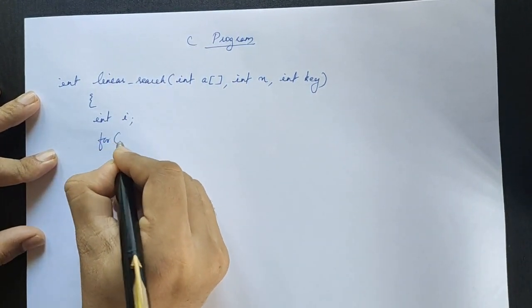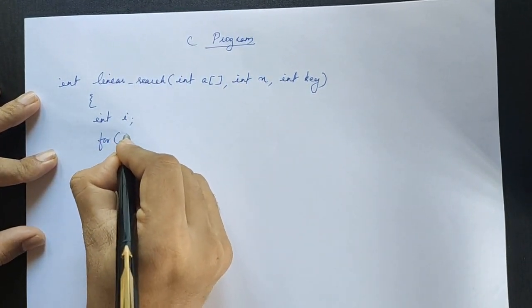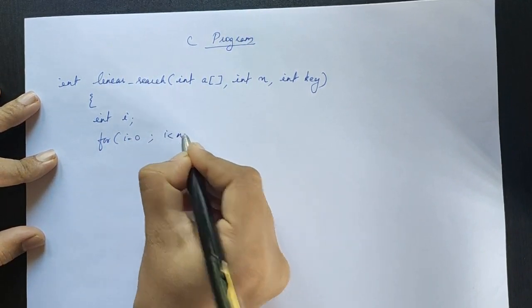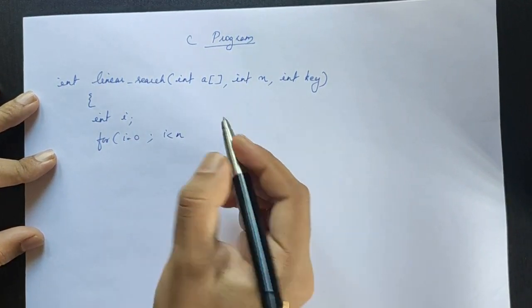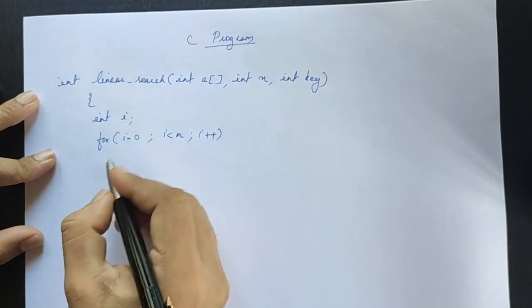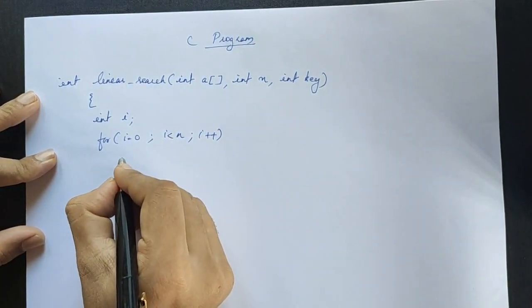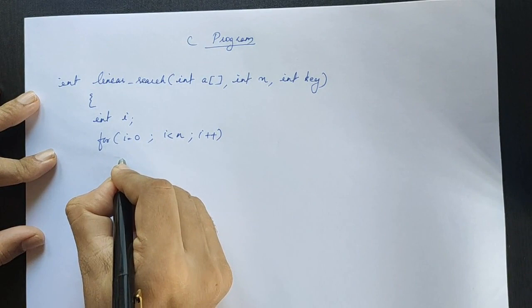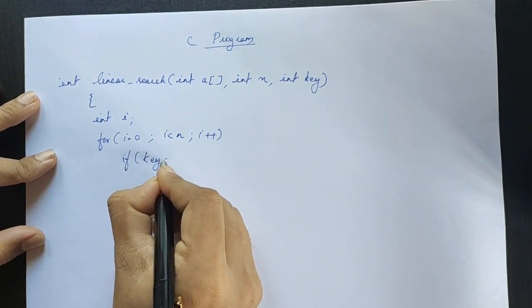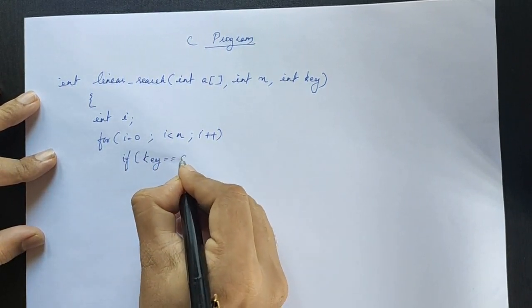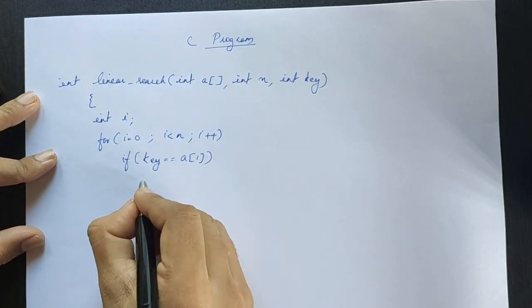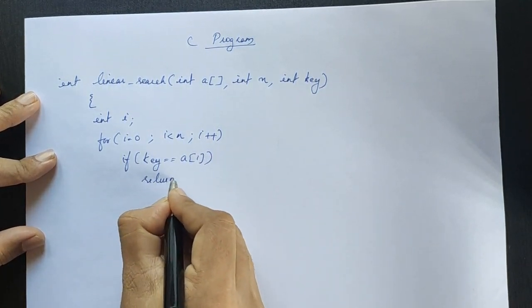We declare a variable and use a for loop. The loop starts i at zero and goes to n minus one. If the key is equal to a[i], we return i.